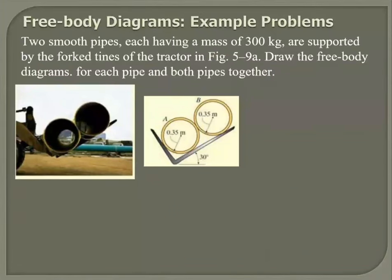I've got two smooth pipes, each having a mass of 300 kg, supported by the fork tines of the forklift or tractor. Draw the free body diagram for each pipe. I want you to draw the free body diagram of pipe B only.